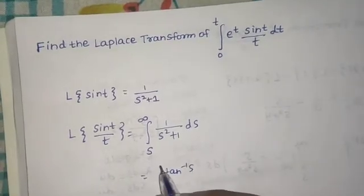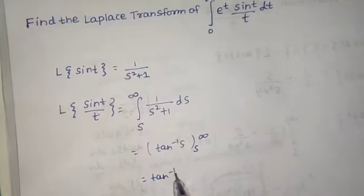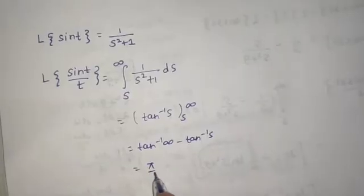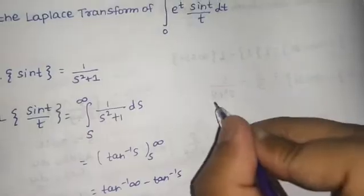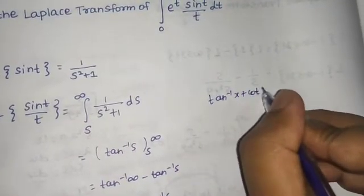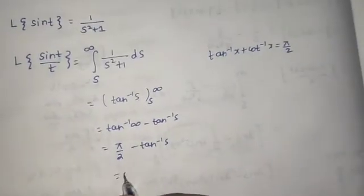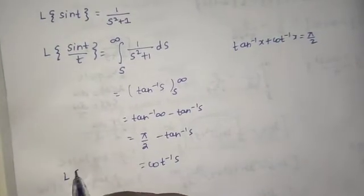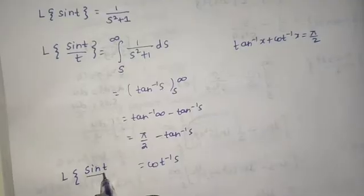Integrating 1/(s² + 1) gives tan⁻¹(s), evaluated from s to infinity. So we get tan⁻¹(∞) minus tan⁻¹(s), which is π/2 minus tan⁻¹(s). Since tan⁻¹(x) + cot⁻¹(x) = π/2, we can write this as cot⁻¹(s). So the Laplace of sin(t)/t is cot⁻¹(s).